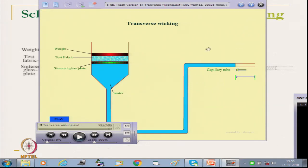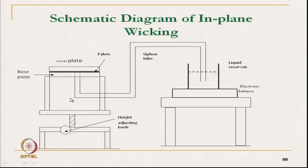Instead of the meniscus, another arrangement can be used which siphons out the water and records the reduction in mass. This is shown in the in-plane wicking system diagram, where the meniscus has been replaced by a microbalance electronic balance. As water is wicked, the mass of water is reduced and that is recorded by computer, giving the transverse wicking data with time.